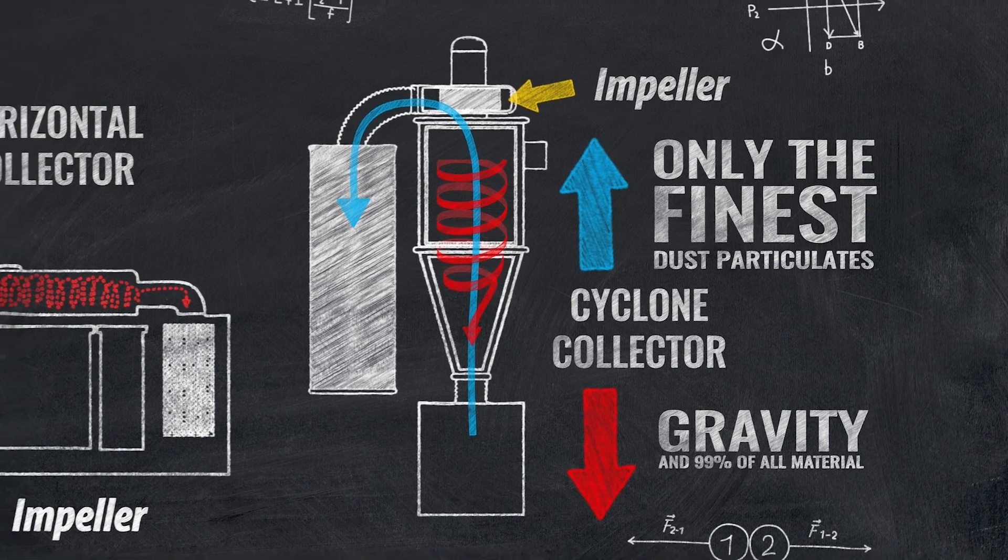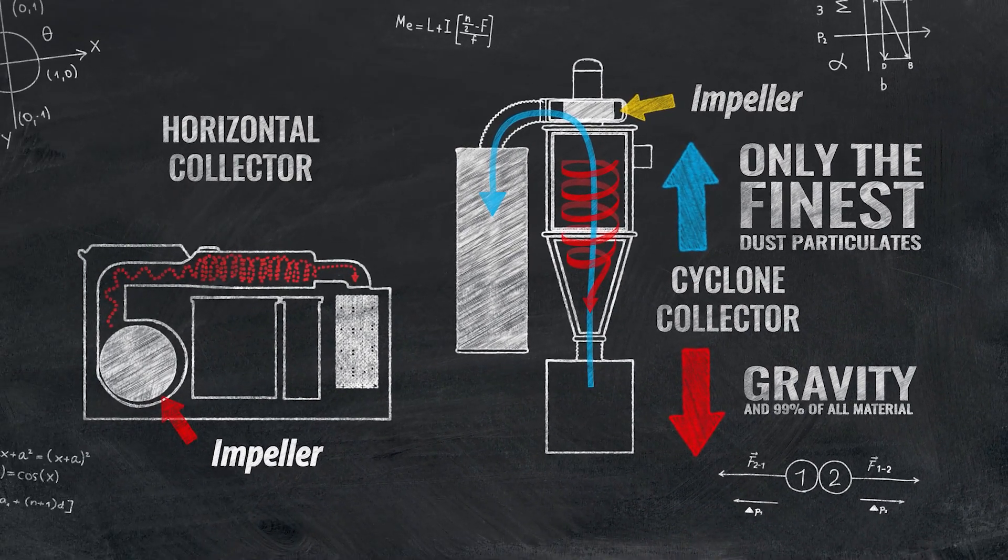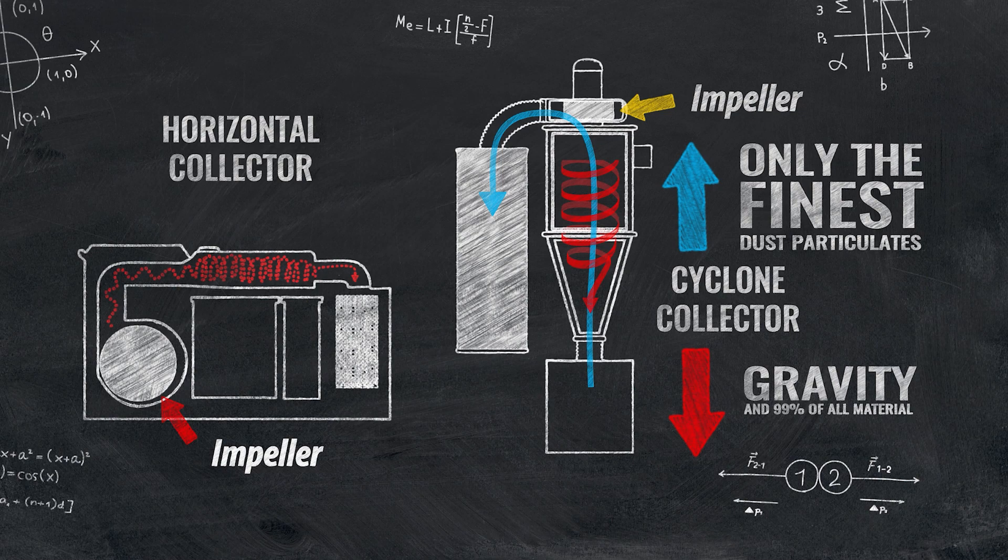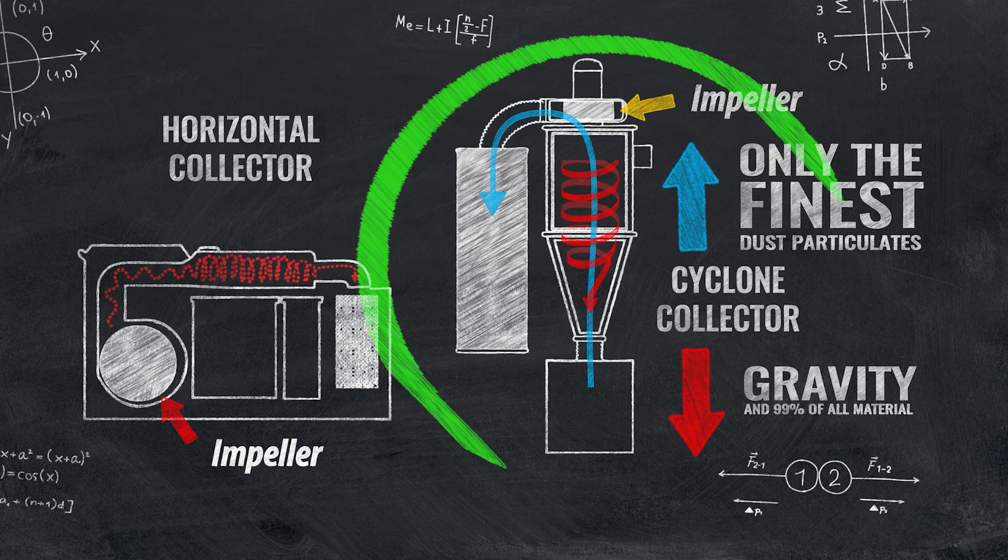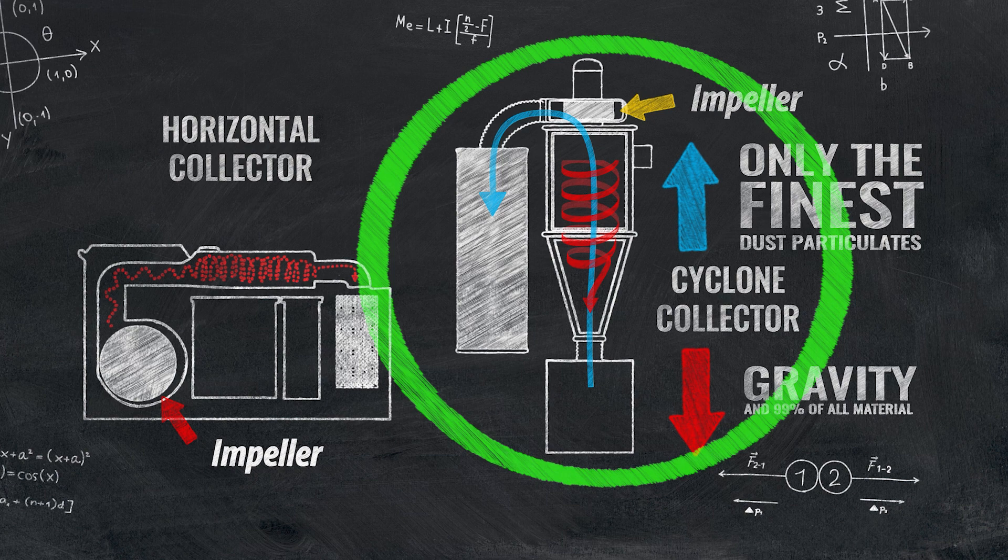For any type of cyclone separator, the focus is to remove unwanted particulates without restricting the movement of the air. Vertically-oriented separators are the clear winner in this regard, and are considered the best practice in the industry.